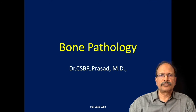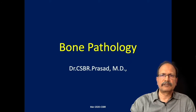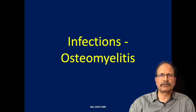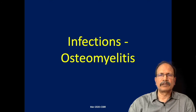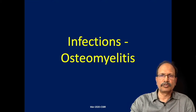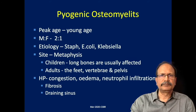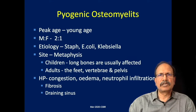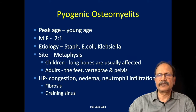Hello students, we are going to deal with one of the aspects of bone pathology — that is infections — which we will call osteomyelitis. Osteomyelitis refers to infection of the bone, or inflammation of the bone and also the bone marrow. Both components are involved in the process of inflammation. Osteomyelitis can be broadly classified into acute and chronic osteomyelitis, or sometimes a specific variety like tuberculous osteomyelitis.